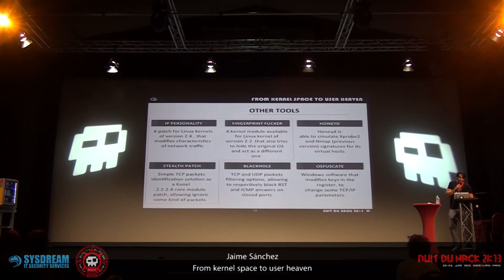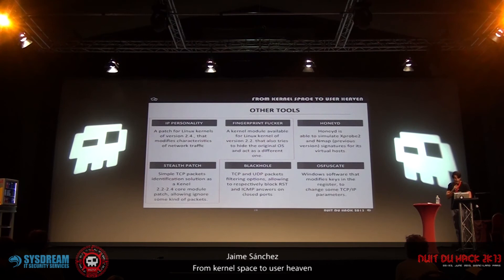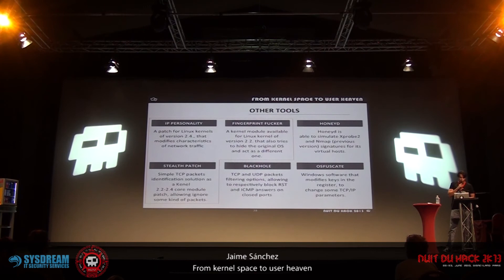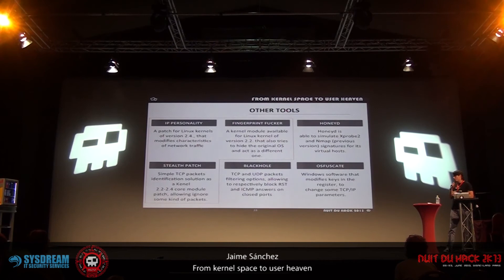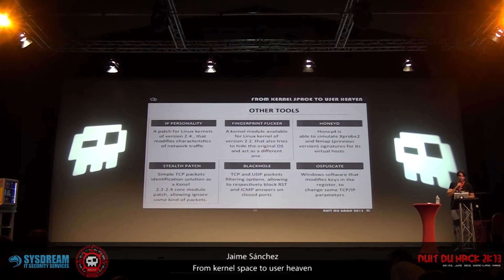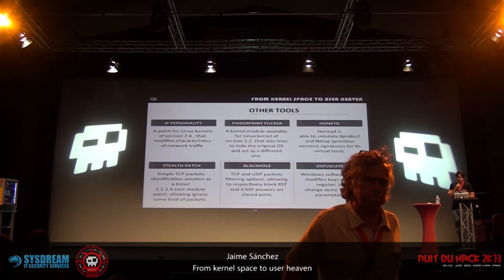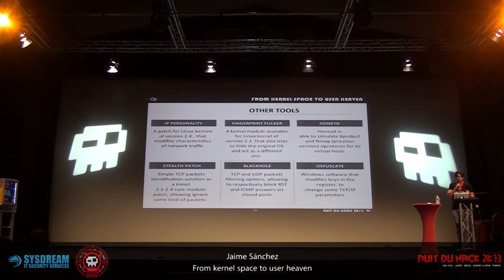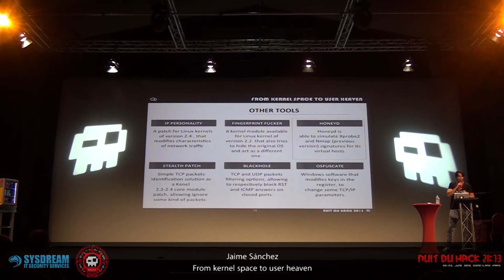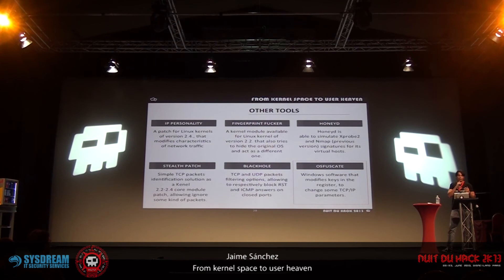Other tools have existed in the last years. The first three are IP Personality, the Stealth patch, and Fingerprint Hack — all available for kernel 2.4 or 2.2. They work differently: one tried to modify the network stack, others tried not to respond to Nmap probes, and others just ignore packets. Another was BlooD HolE, available for BSD distributions, which gives reset responses to all Nmap probes. Honid was able to simulate Xproof and Nmap signatures but only for the first version. The last was Obfuscate, which worked for Windows and modified the registry to respond with different parameters to initial tests.